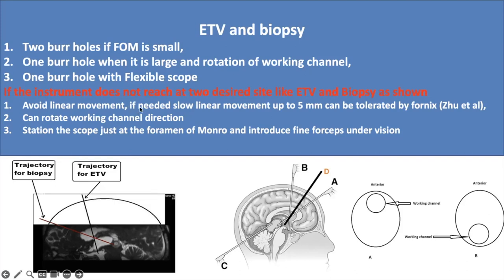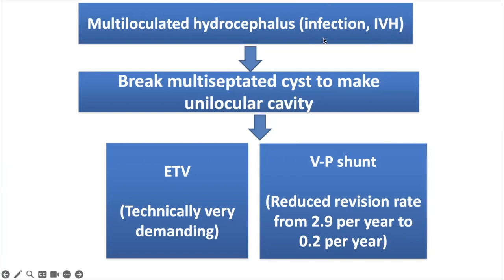One should avoid linear movement when in the third ventricle, but if required, linear movement up to 5 mm can be tolerated by the fornix. A second option is to rotate the endoscope working channel — keep it anteriorly for ETV and rotate posteriorly for biopsy. Another option is to station the scope at the foramen of Monro and introduce fine instruments under endoscopic vision. Although difficult, this is useful in multiloculated hydrocephalus from infection or IVH, allowing you to break septa and create a unilocular cavity.